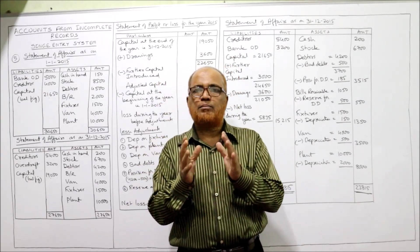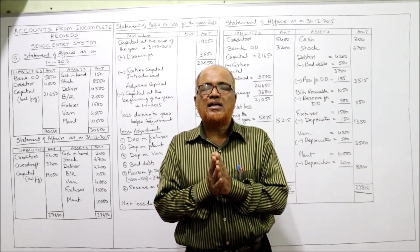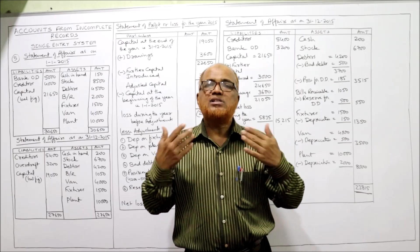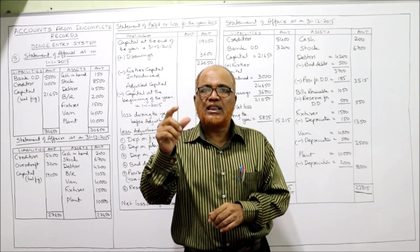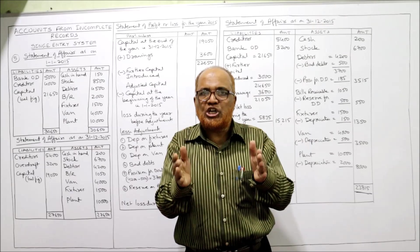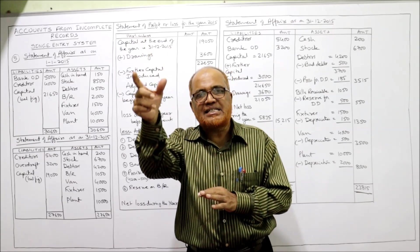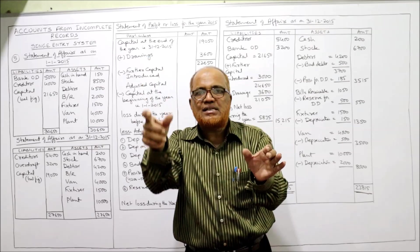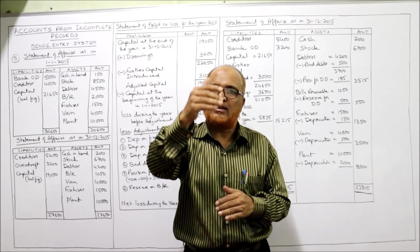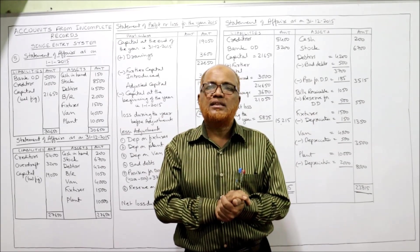In this problem we have to make the final statement of affairs and also ascertain the profit made during the year. First of all, when single entry method is followed we cannot prepare trading profit and loss account or balance sheet. We need the capital at the beginning and at the end. We find capital by preparing statement of affairs — assets on right-hand side, liabilities on left-hand side.